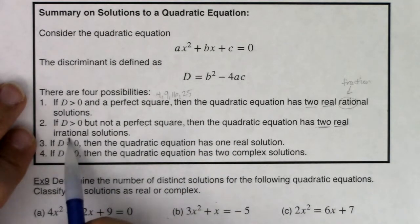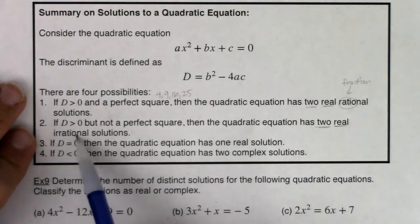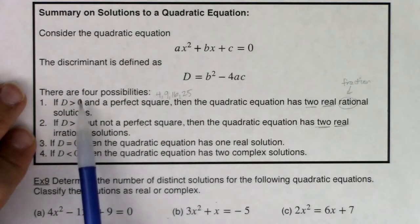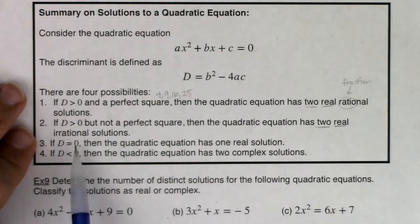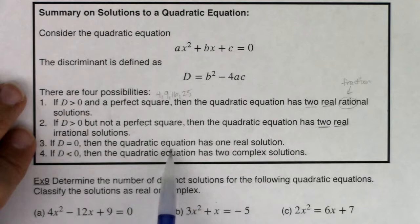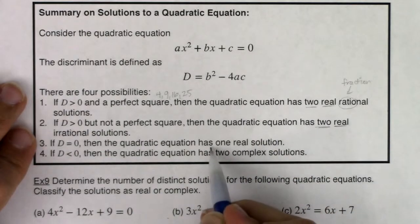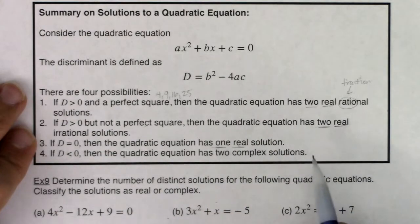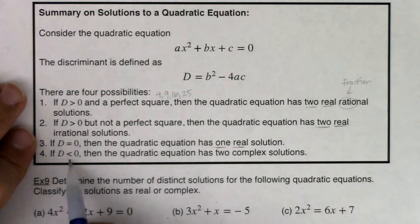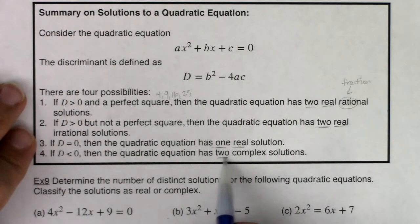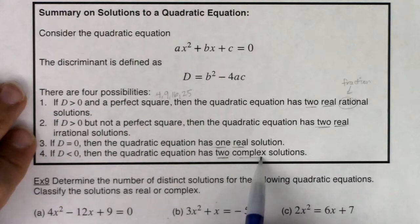So we've got two options for when the discriminant is positive. Now if the discriminant is zero, then the quadratic equation has one real solution. If the discriminant is less than zero, then the quadratic equation has two complex solutions.